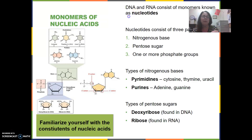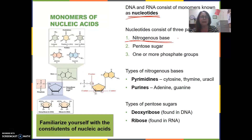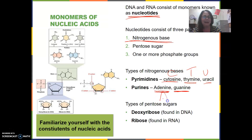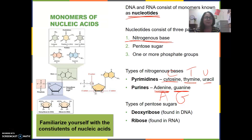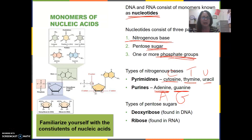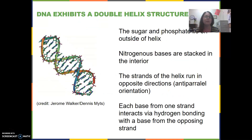Nucleotides are the monomers of both DNA and RNA — they are the monomers of nucleic acids. They consist of three parts: a nitrogenous base, a pentose sugar (called ribose or deoxyribose), and a phosphate group. The nitrogenous bases can be cytosine, thymine, or uracil, and also adenine or guanine — represented by the letters C, T, U, A, or G. C, T, A, and G are found in DNA, but T is replaced with U in RNA. A sugar, a phosphate, and a base form the nucleotide, and nucleotides linked together form RNA and DNA.